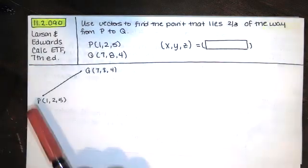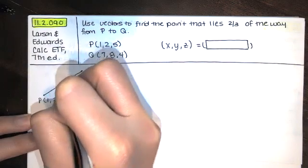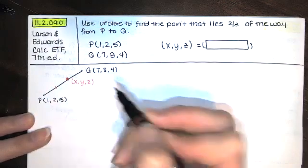We want to go two-thirds of the way from here to here. So the question is, if I split this into thirds, what point is that?